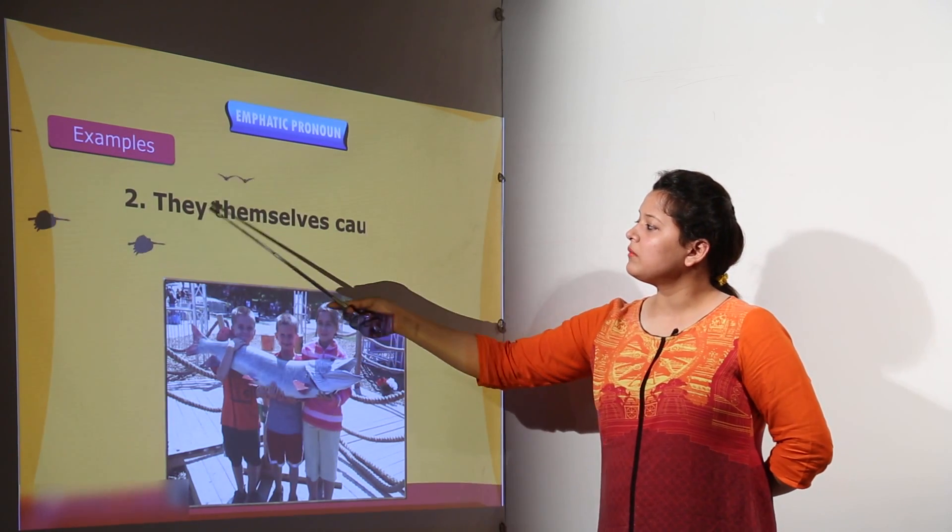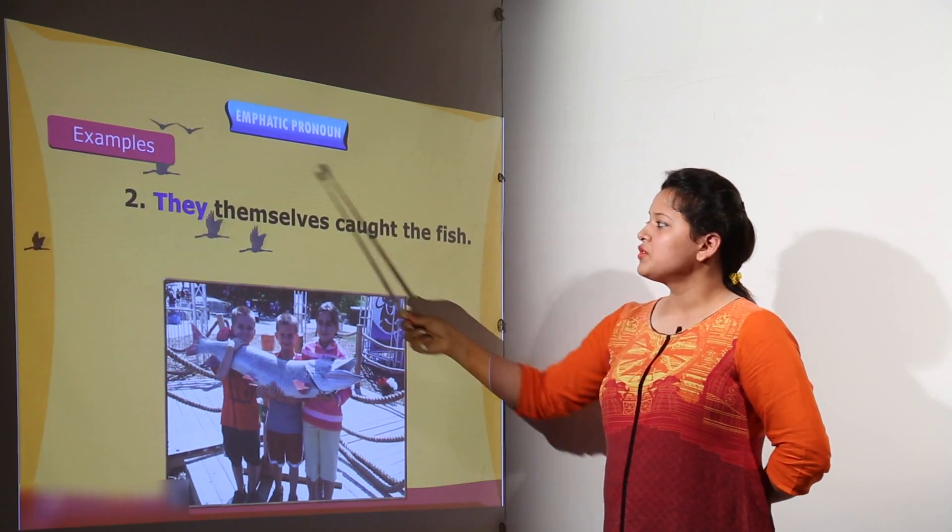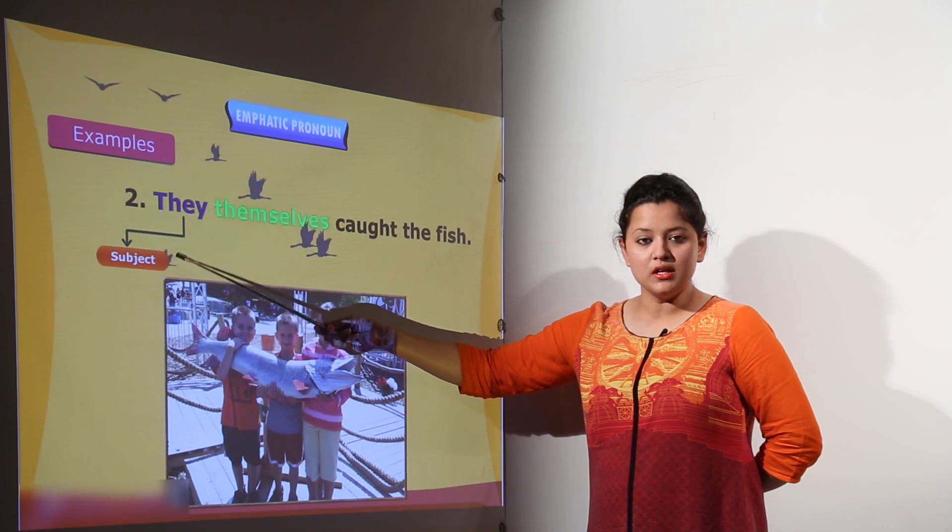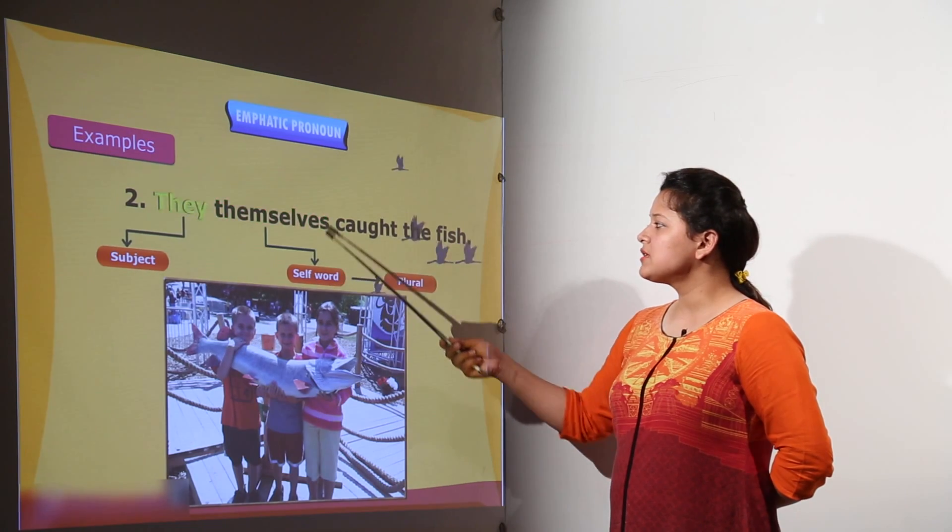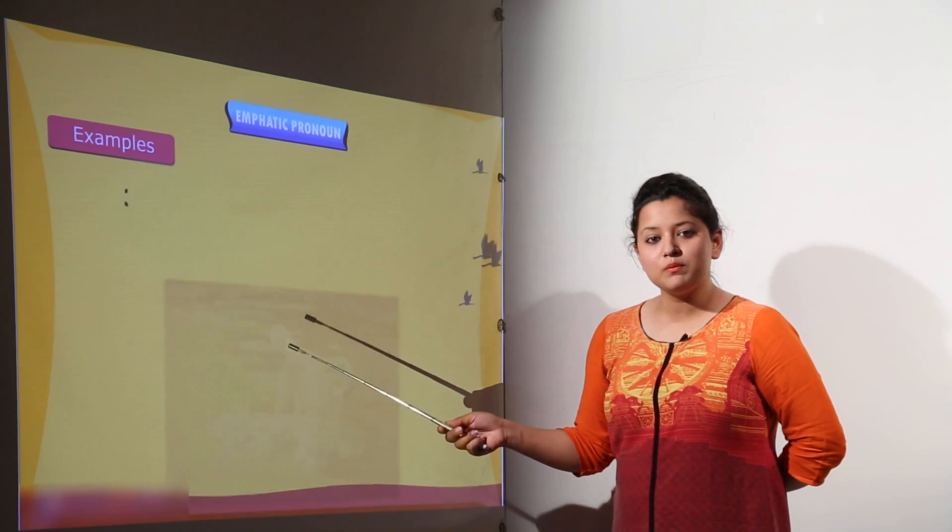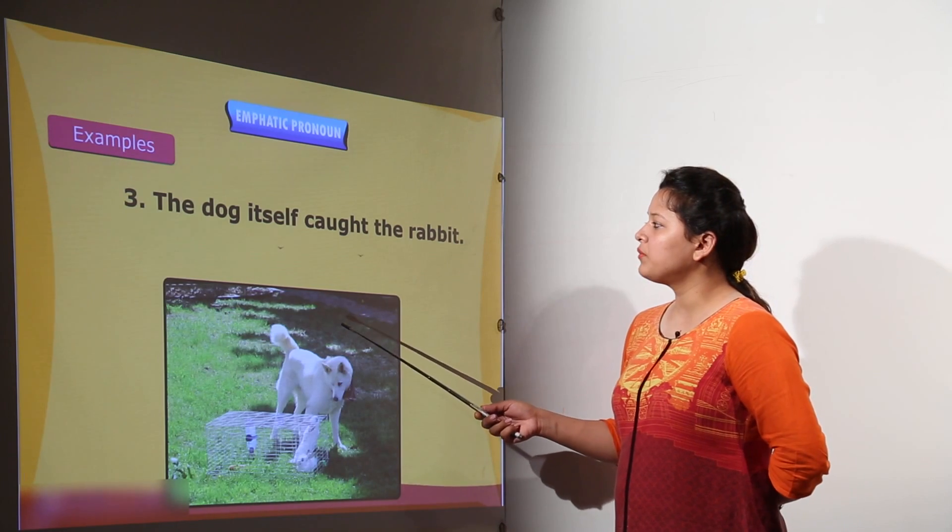The second example can be, they themself caught the fish. So, they is the subject over here. Themself is the self word and which is plural over here. So, along with plural, we can use the plural emphatic pronoun.